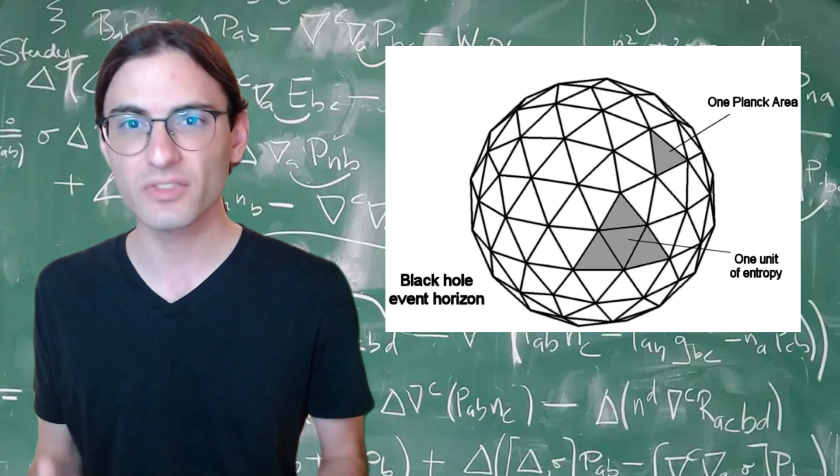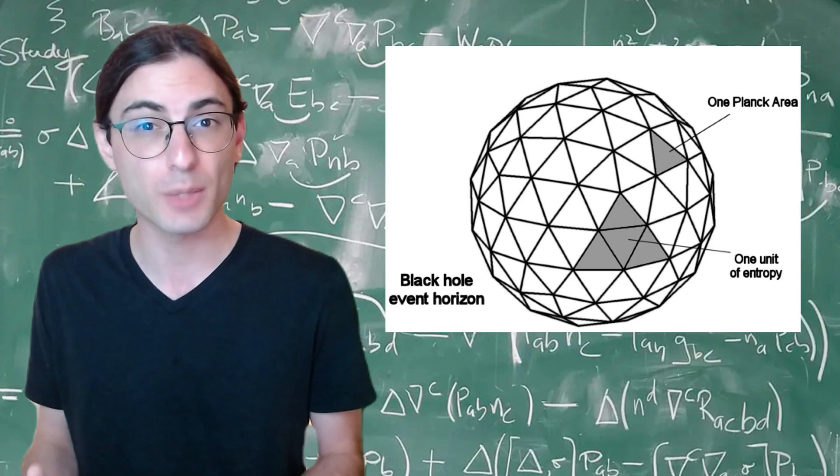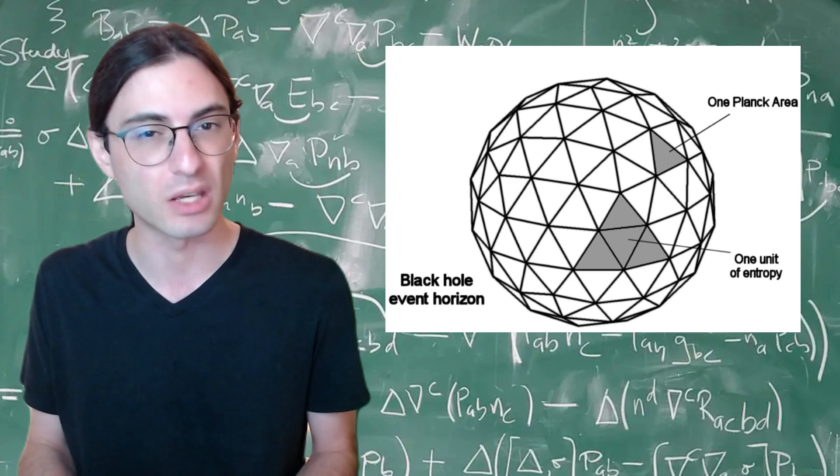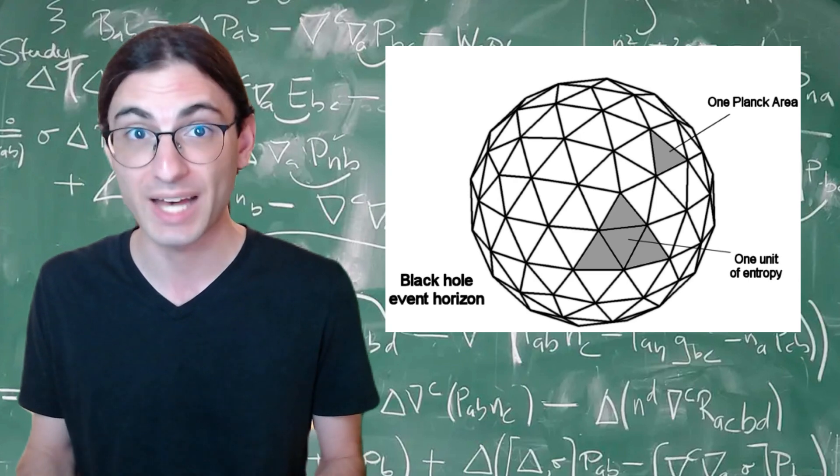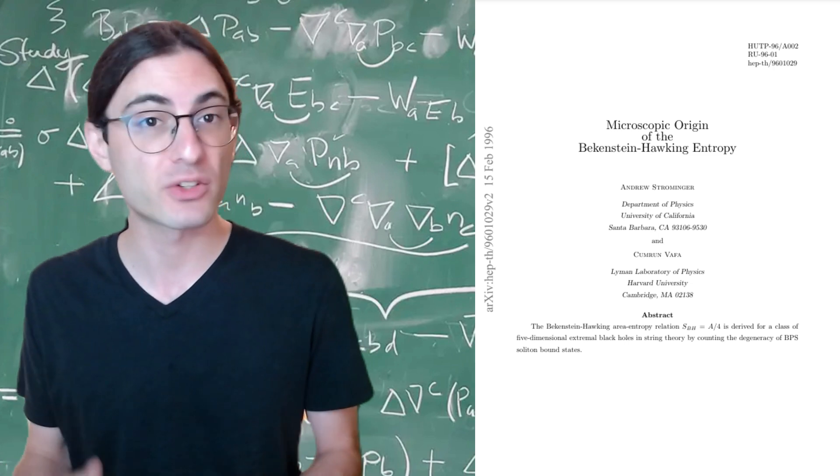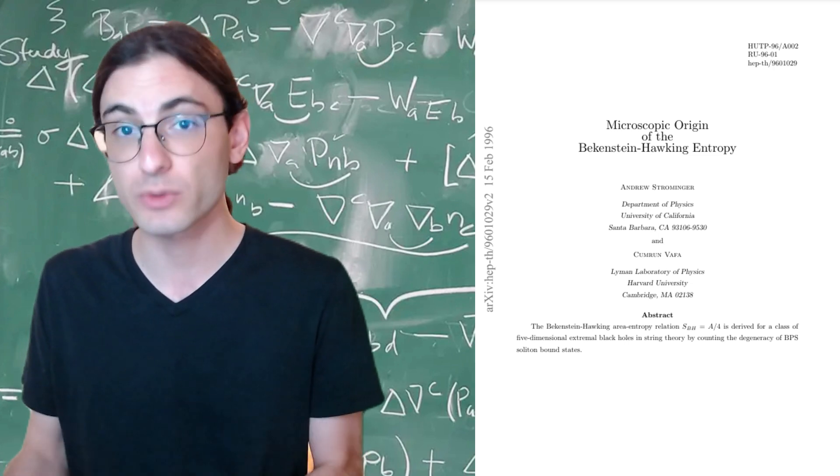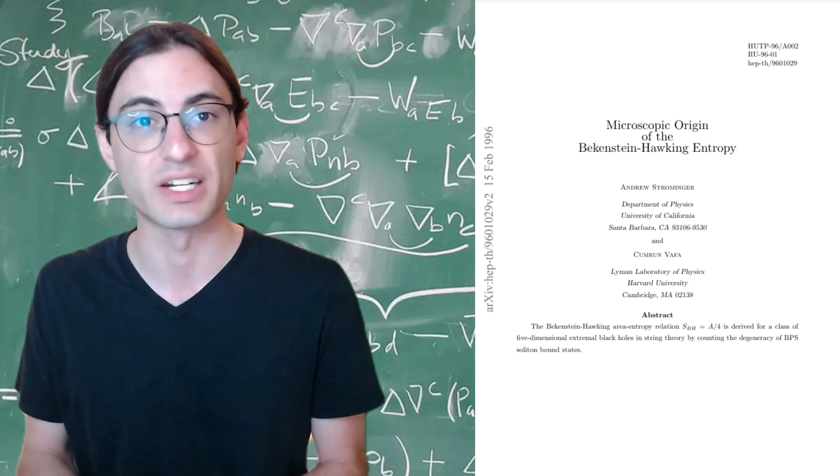And yet, to make sense of this result requires a statistical description of the different ways a black hole can be. In technical terms, one would need a way to count the number of microstates the black hole has. And wouldn't you know it, the first microscopic calculation of a black hole's entropy was performed using string theory by Strominger and Vafa in 1995.